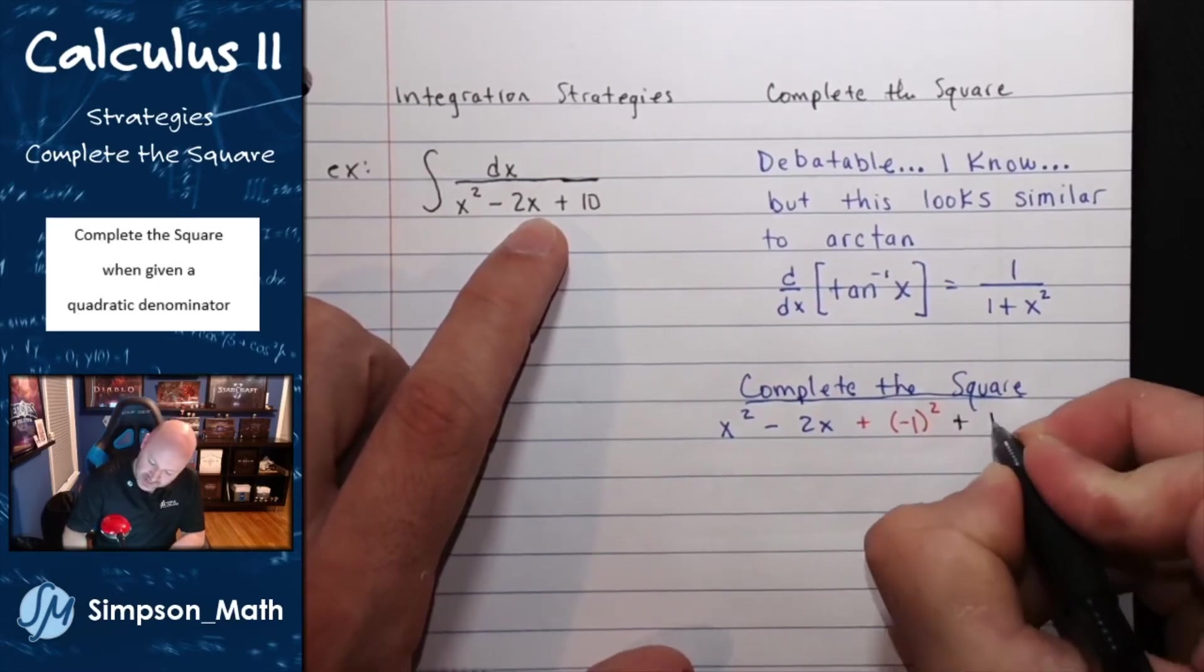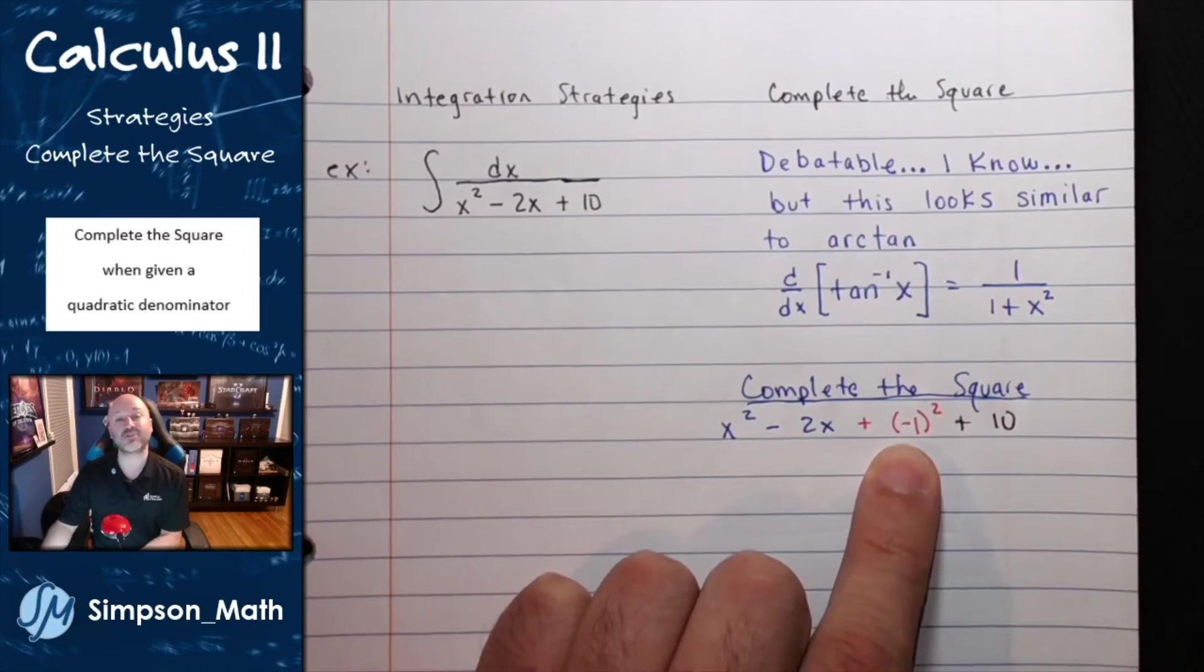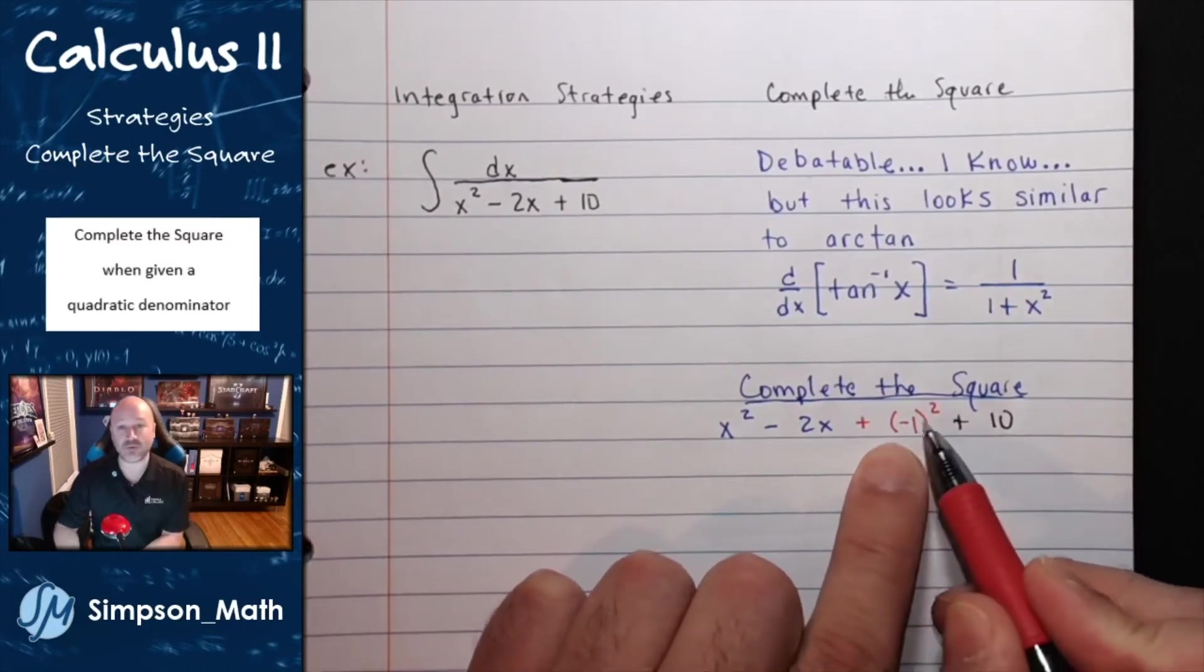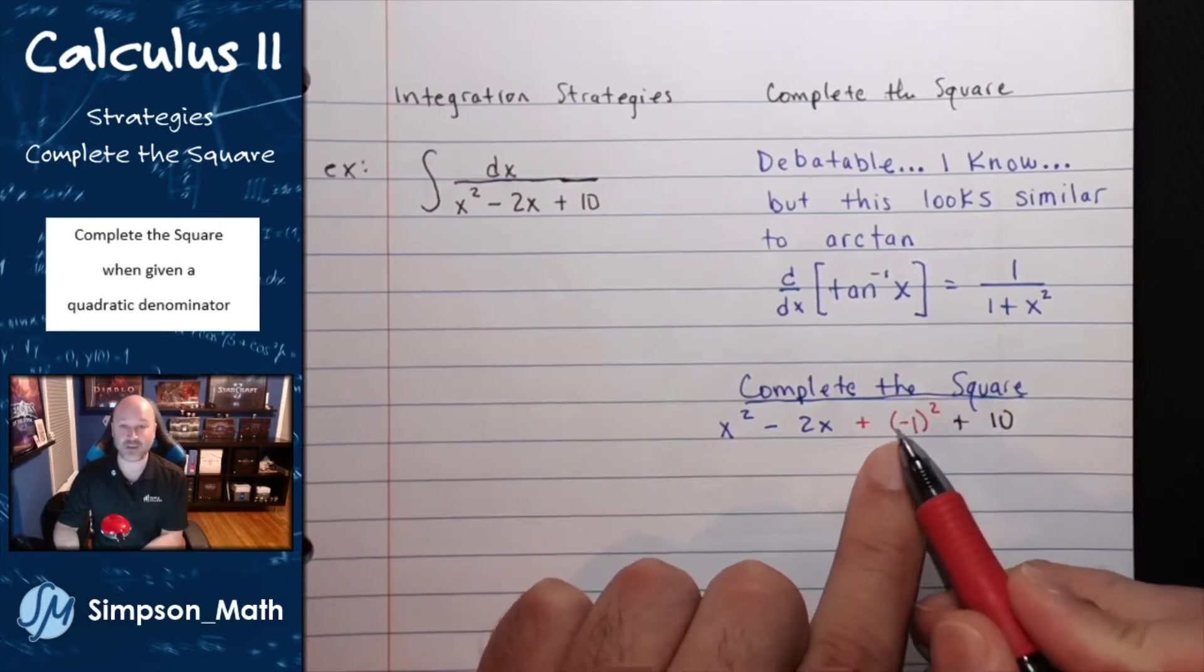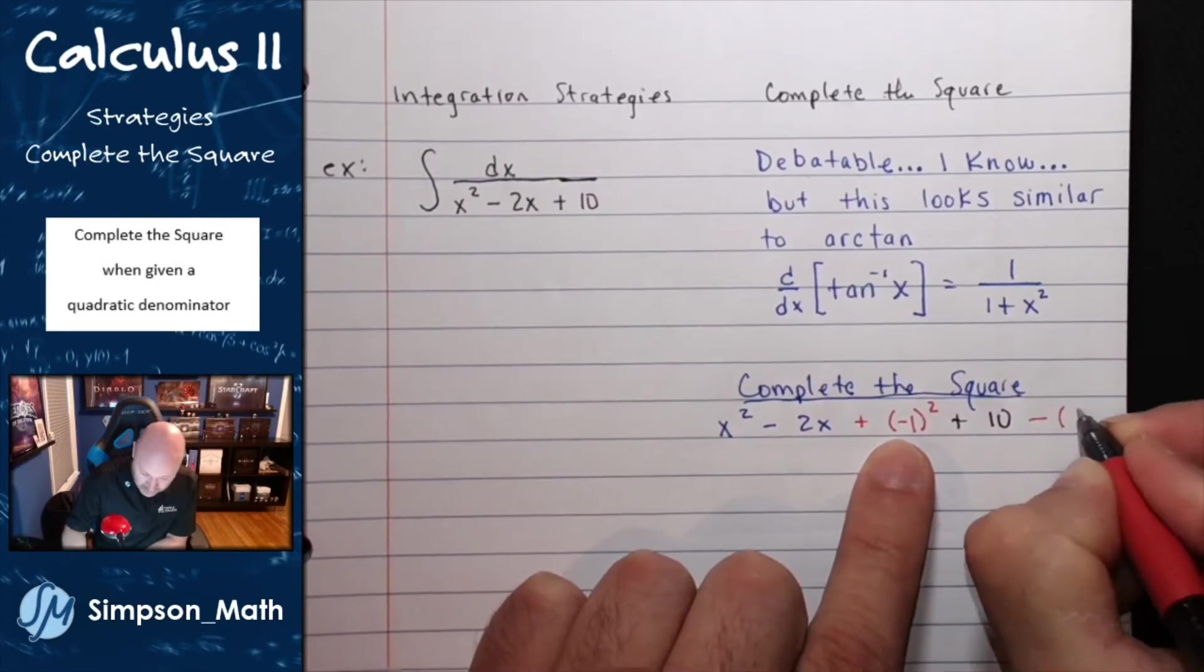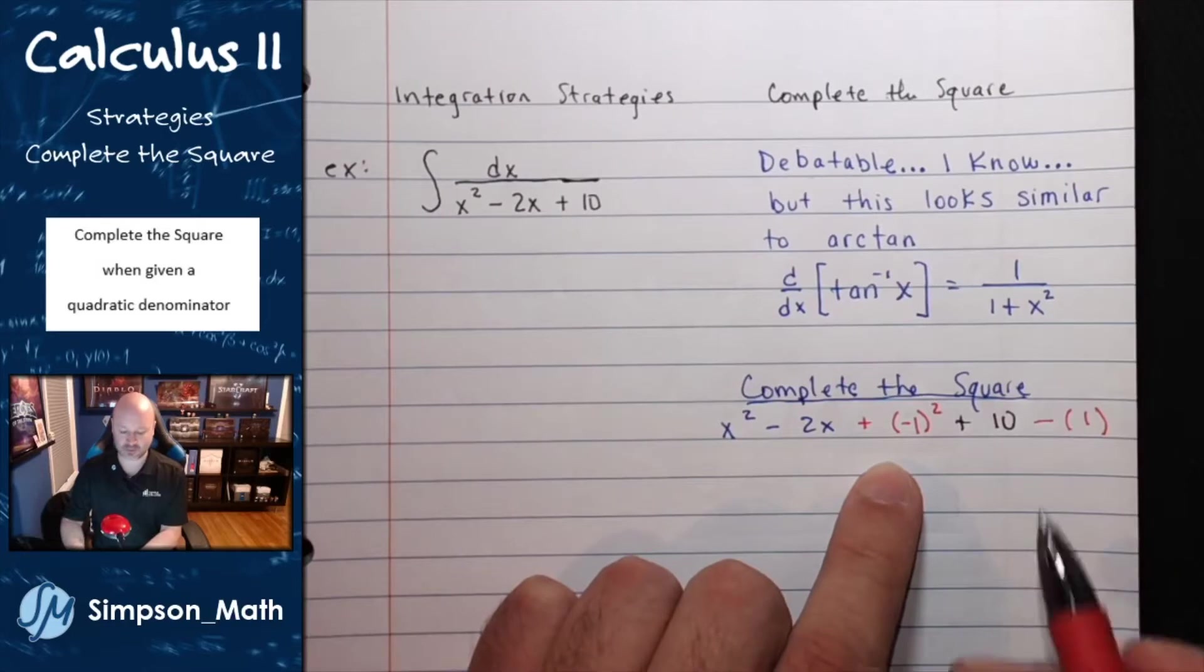But of course, you can't just add numbers to expressions. That changes their value. So you then subtract that number right back off. So if I added negative 1 squared, that means I added 1 to this expression. I need to subtract 1 right back off to keep that expression balanced or the same.